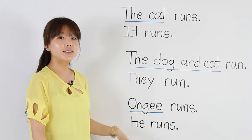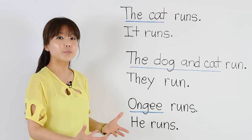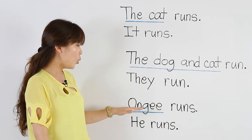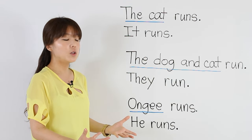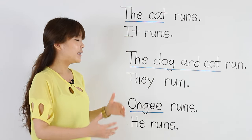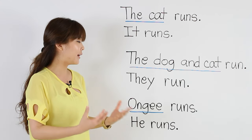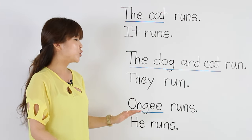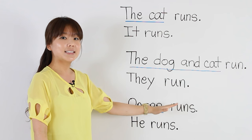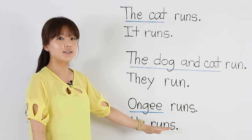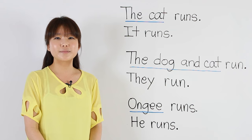Now for the last sentence, I'm going to talk about my cat, Ongi. Ongi is a cat — he's an animal, but he has a name. He's a boy cat, and I love him and he's like family. So, Ongi runs — I can say, He runs.